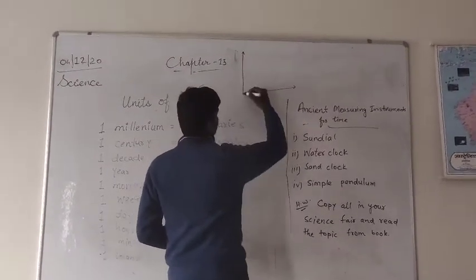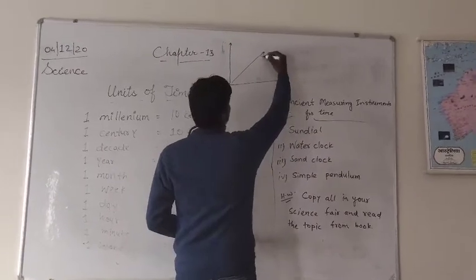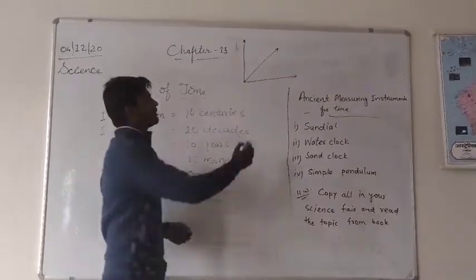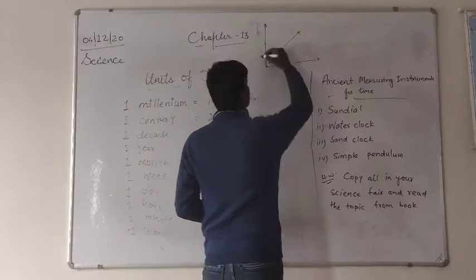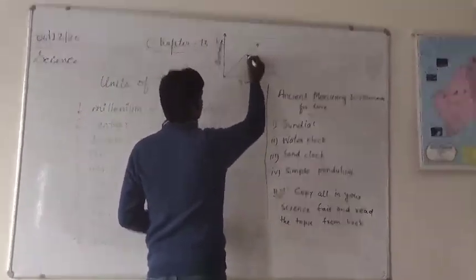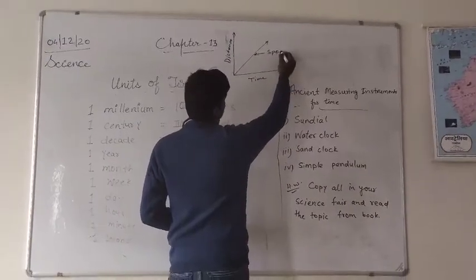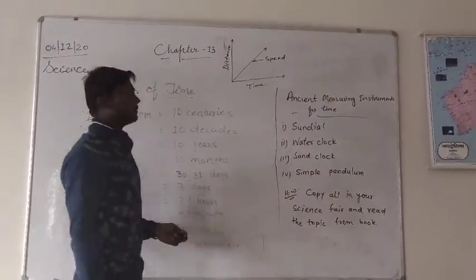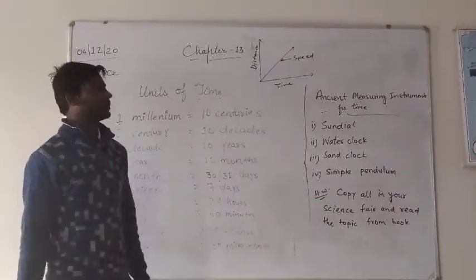This is a straight line graph, this will be triangle, this will be distance and this will be speed. So this is the graph showing uniform motion also.